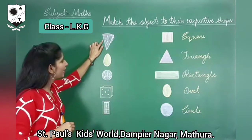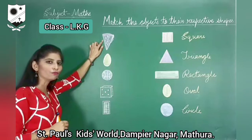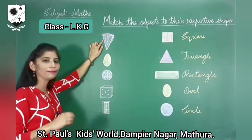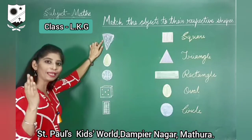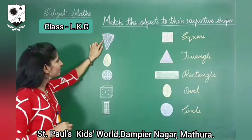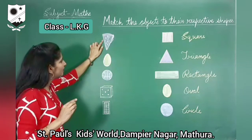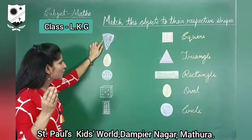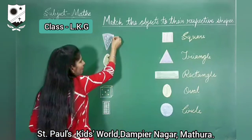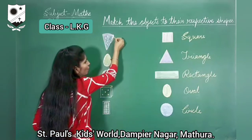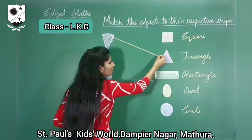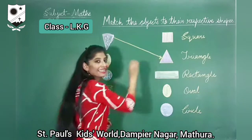Okay, can you tell me what is this? I think this is a piece of a pizza. So what you have to do? This looks like a piece of pizza and it resembles the triangle shape.